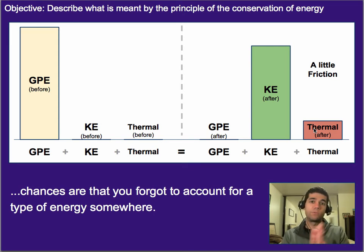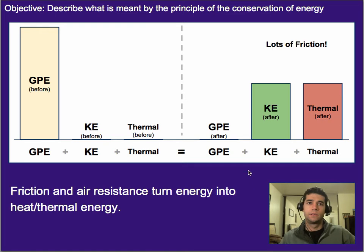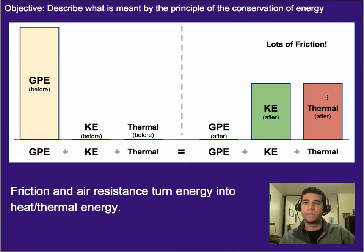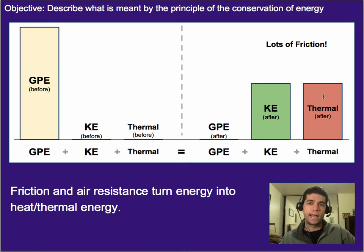You can feel this simply by rubbing your hands together — the friction warms them up a little bit. So if there's extra friction, you'll get more thermal energy, and it'll look like there's a bigger loss in kinetic energy. In reality, you're just not accounting for the thermal energy. In general, friction, air resistance, drag, and many resistive forces that slow us down turn any type of energy into thermal energy or heat.